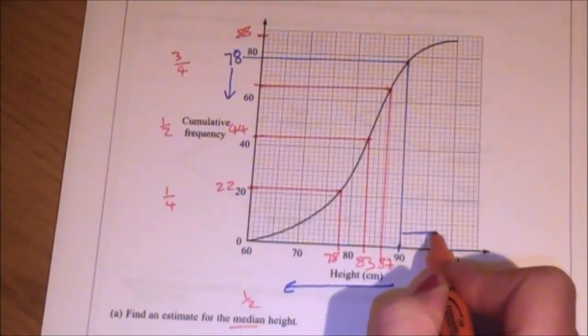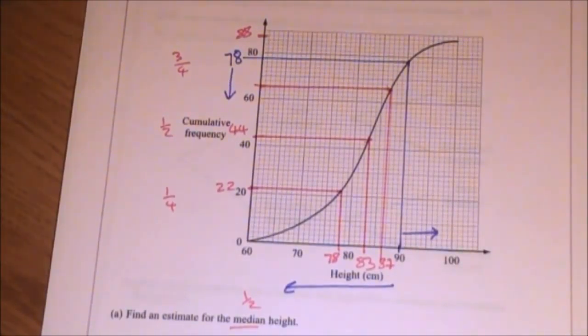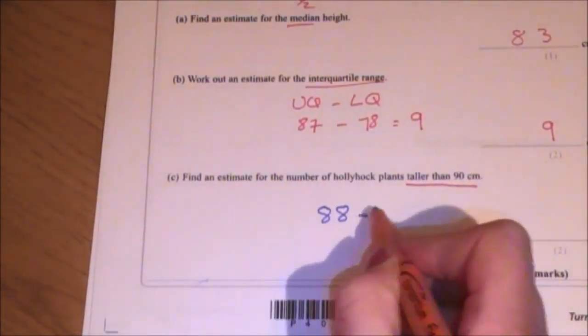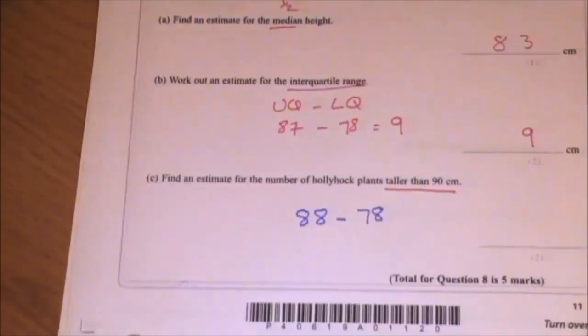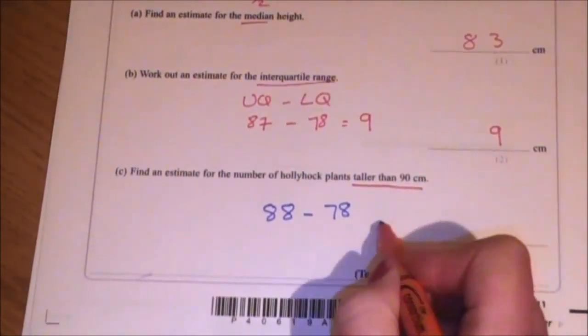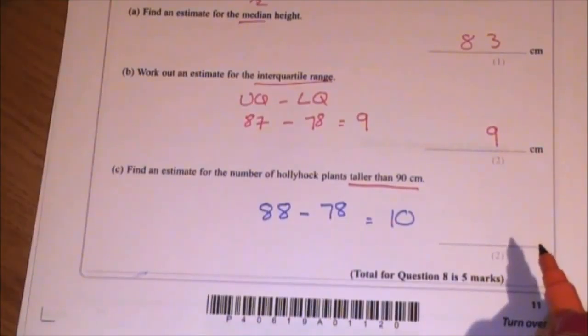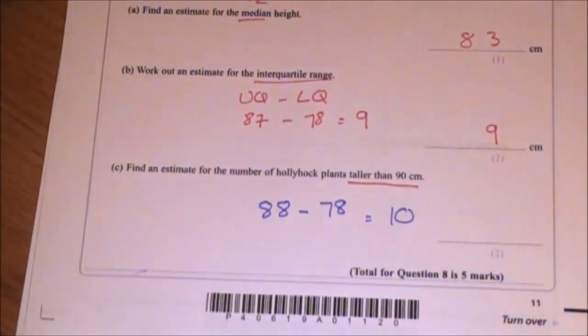I want the plants bigger than 90. So it's going to be the full 88 plants take away the 78 plants that are smaller than 90 centimeters. And that leaves me with 10 plants that are greater than 90.